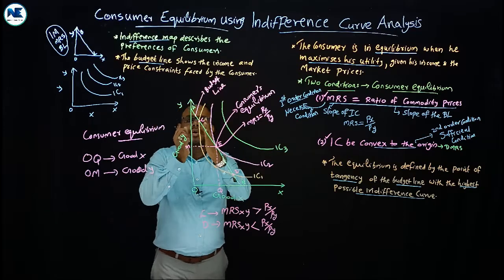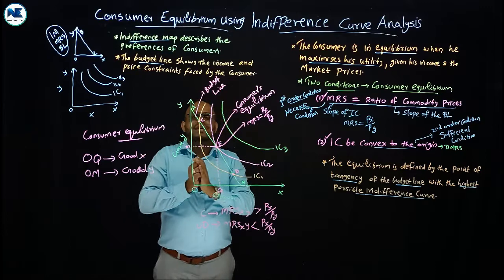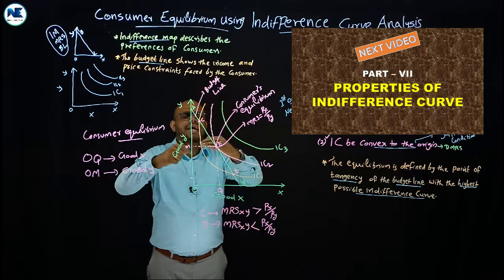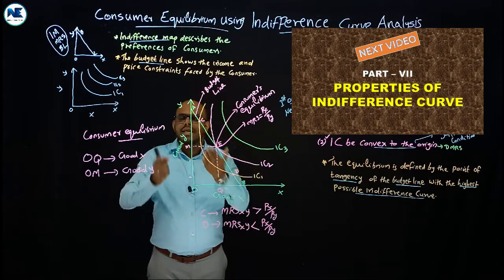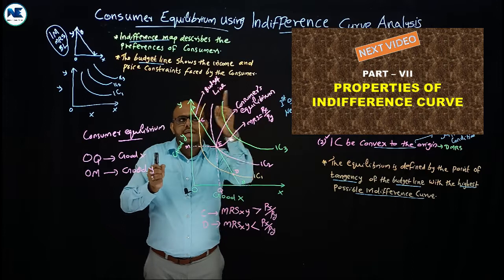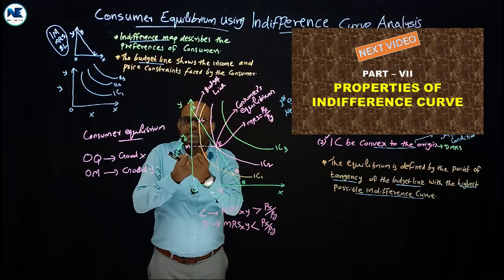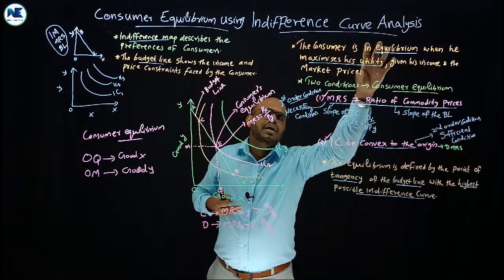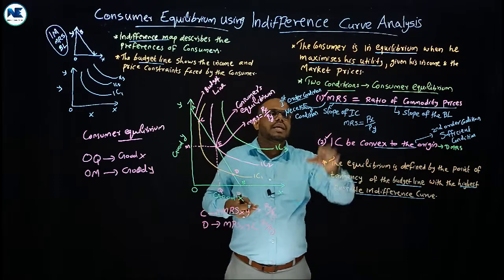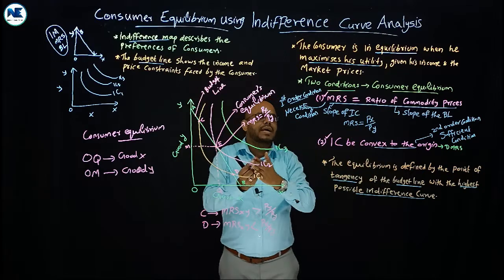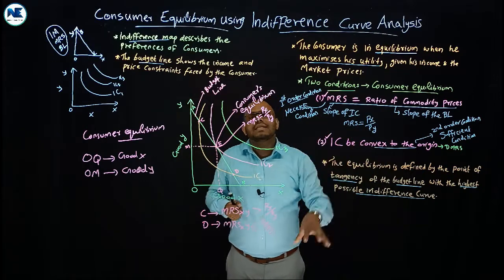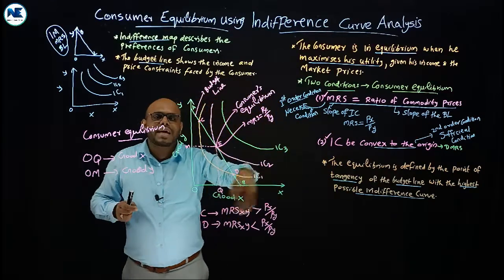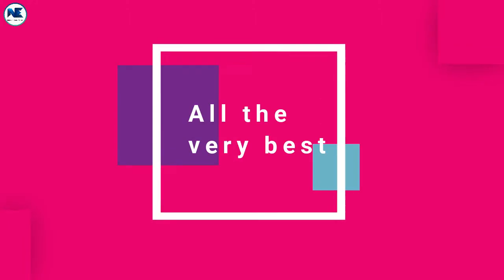To summarize, consumer equilibrium using indifference curve analysis involves: the indifference curve, the indifference map, the budget line, and the conditions for equilibrium — the necessary condition (first order) and the sufficient condition (second order). The equilibrium is shown diagrammatically where both conditions are satisfied at the point of tangency. Happy learning, thank you.